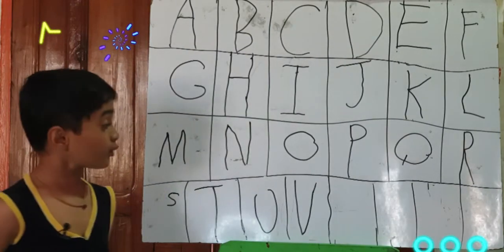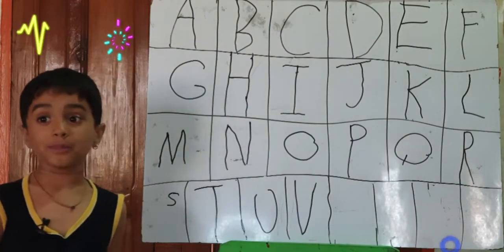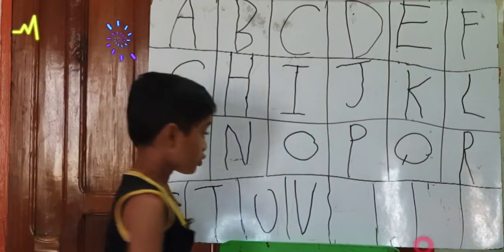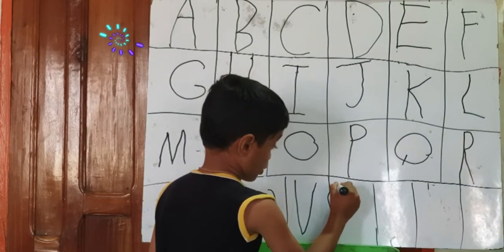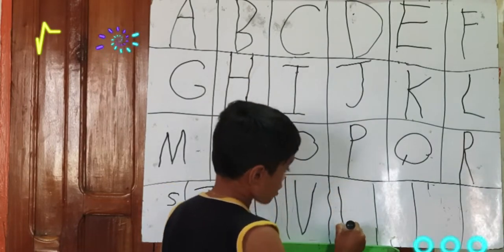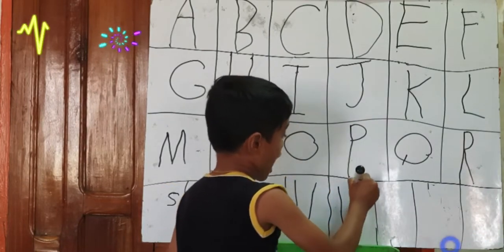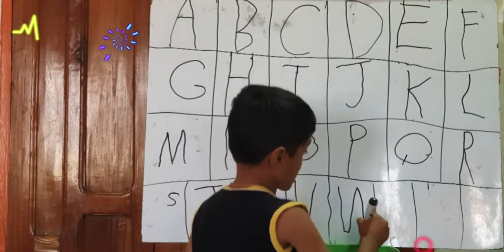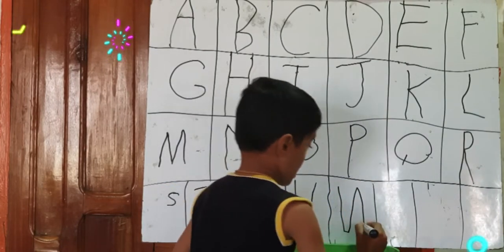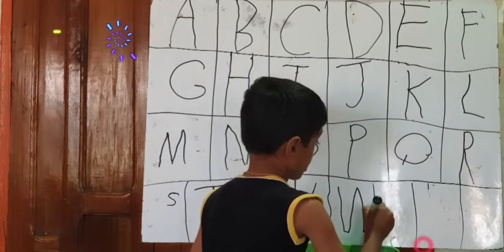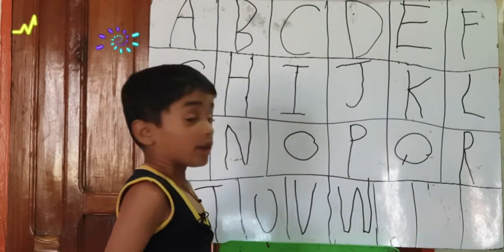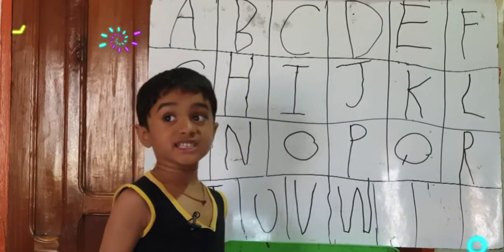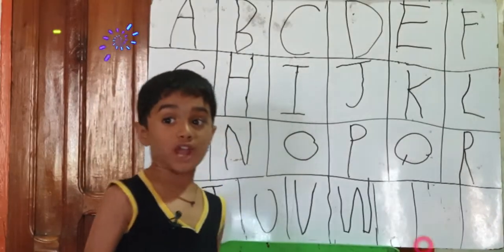Now I'm learning W. Cross down, cross down, cross up, cross down, cross down, and cross up. That is W.